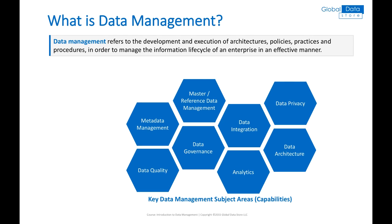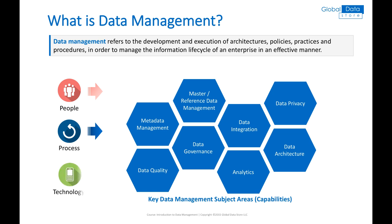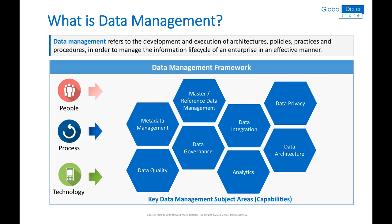Each capability has three aspects. One, people — referring to the organizational aspect, the roles and responsibilities required for the capability. Two, process — referring to activities that are associated with the capability. And three, technology — referring to technologies and tools required to support capability business processes. Data management subject areas are closely related and have a synergized influence on the overall data management framework.